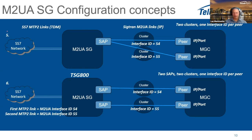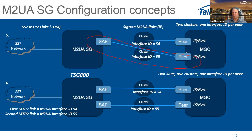The fifth mode has two MTP2 links, two different IPs, two different peers, and two different clusters — meaning the two connections are completely independent. This could be two different MGCs or totally separate networks. You simply repeat the first configuration step twice, creating two different clusters with two different destinations.